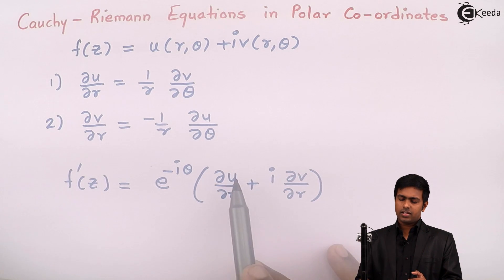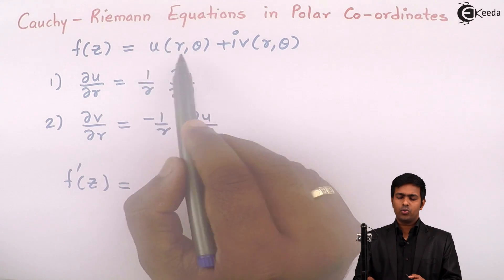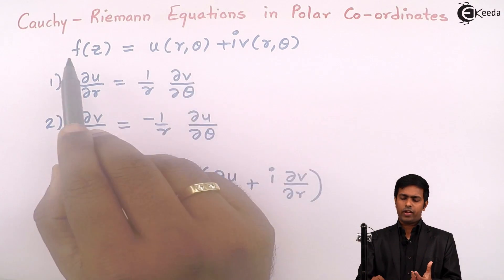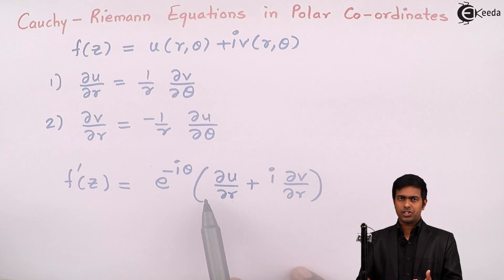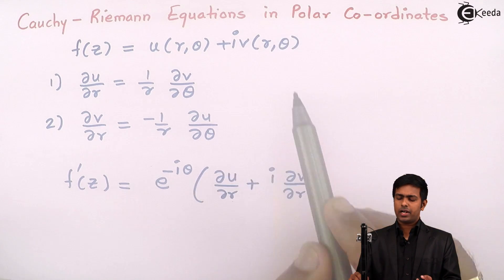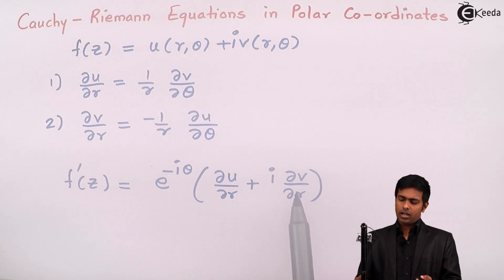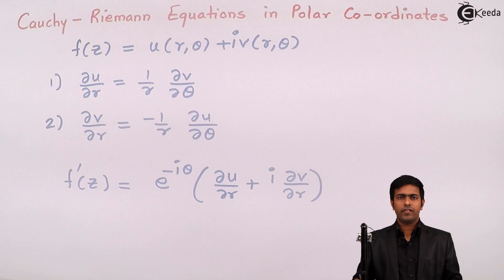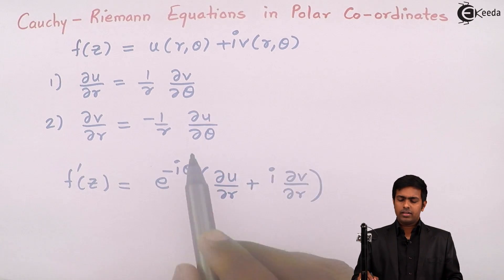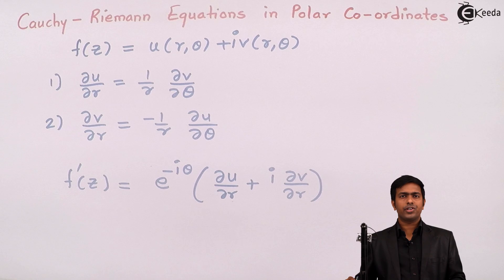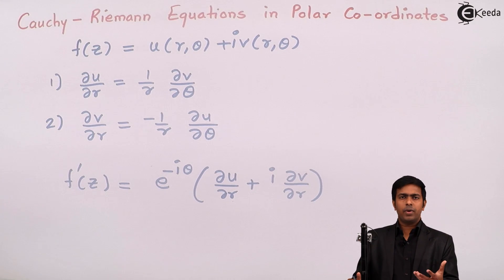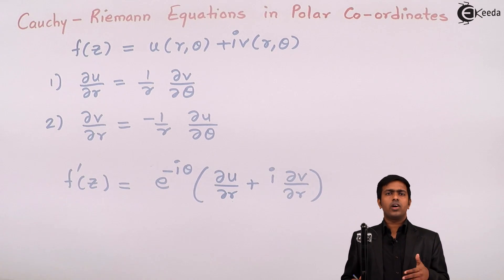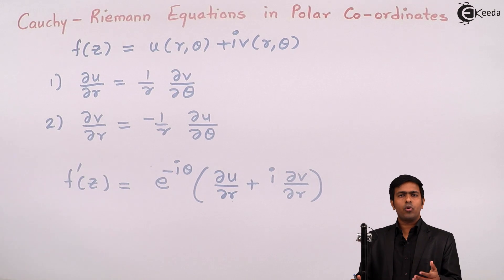Remember this formula for f'(z); we use it whenever f(z) is given in terms of r and theta. This formula requires differentiating the real part u with respect to r partially, then differentiating the imaginary part v with respect to r partially and multiplying by i, adding them together, and multiplying the whole term by e^(−iθ). We will use these Cauchy-Riemann equations in polar coordinates and this formula for f'(z) to solve multiple problems involving analytic functions given in polar coordinates.